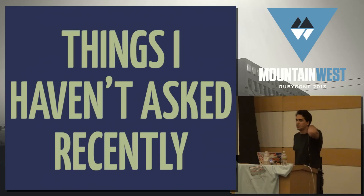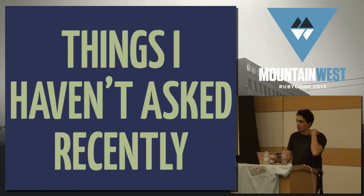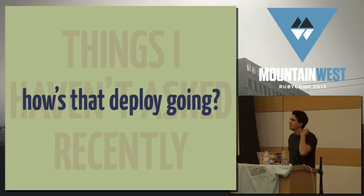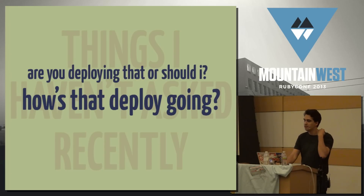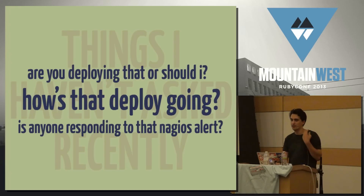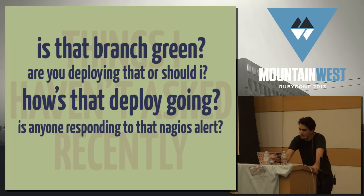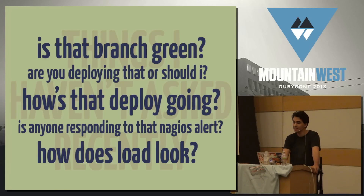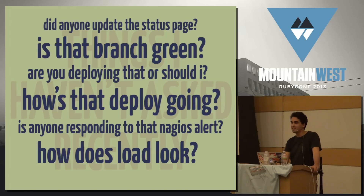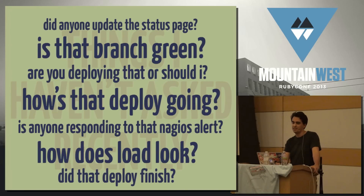Here are a few things I haven't asked recently because Hubot has told me the answer by seeing people actually do the work: How's that deploy going? Are you deploying that or should I? Is anyone responding to that Nagios alert? Is that branch green? How does load look? Did anyone update the status page? Did that deploy finish?